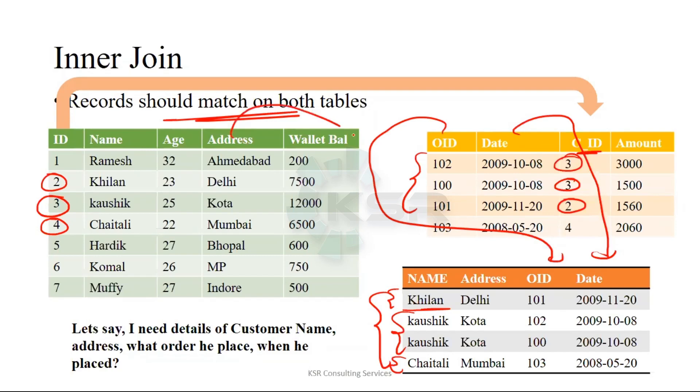In the select code I have selected only OID and date from this table, and I have selected address and name from the other table.